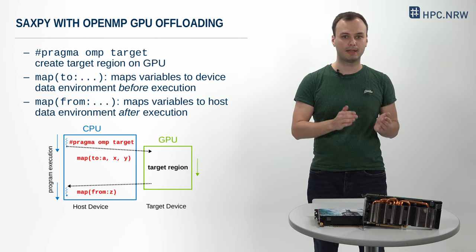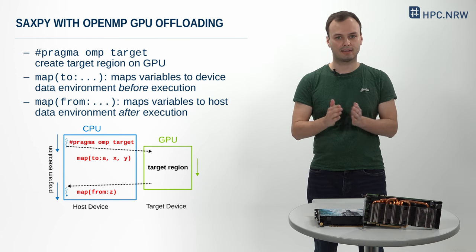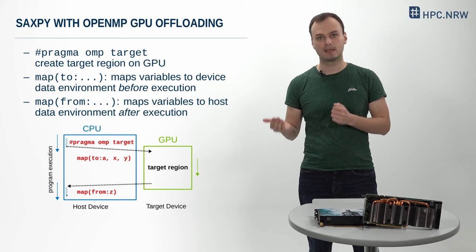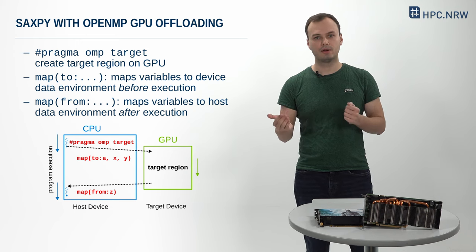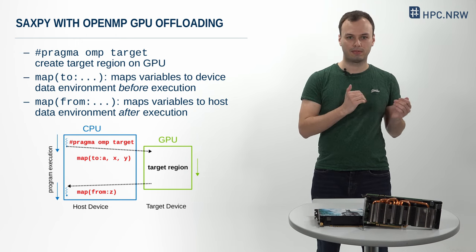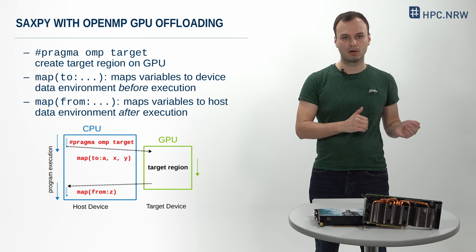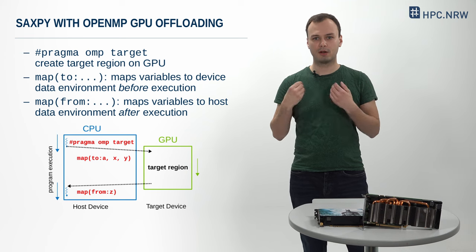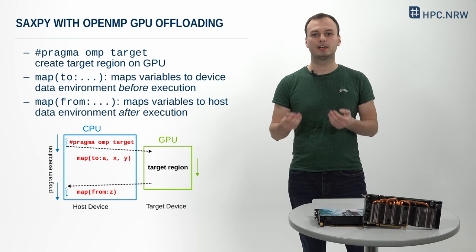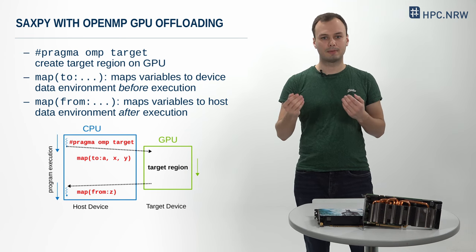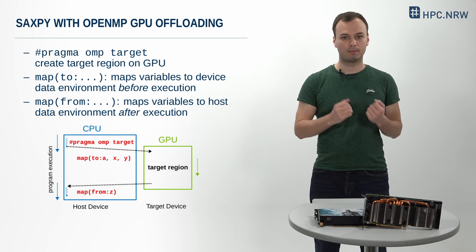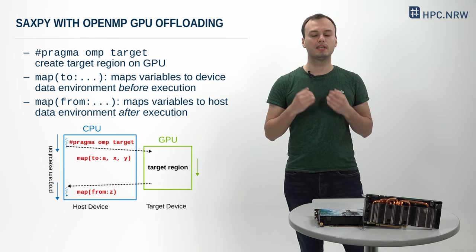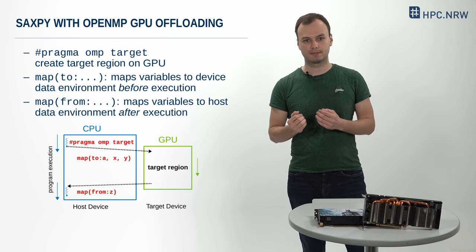Concerning the SAXPY, A, X, and Y are inputs. Therefore, the map type is 'to' for them. On the other hand, Z is the output vector and the corresponding map type is 'from' for Z, after the SAXPY computation is complete.